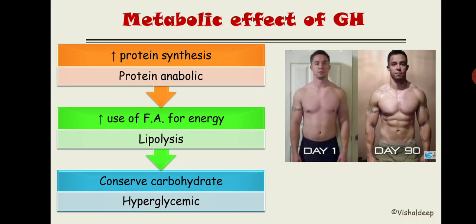A useful formula to remember which hormones increase glucose: any hormone with the letter 'G' in its name tends to increase blood glucose level. This holds true for about 90% of cases. The three key hormones are: GH (growth hormone), glucocorticoids, and glucagon — all increase blood glucose level. That is all for today's lecture; next time we will learn the detailed metabolic effects of growth hormone. Goodbye.